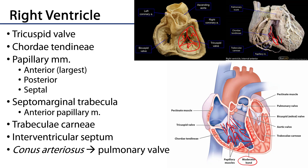The walls of the ventricles are very rough with ridges of muscle. These are invaginations of the myocardium surrounded by the endocardium, called trabeculae carneae, or meaty beams. We'll have a better opportunity to see this in the left ventricle; we don't have a good view of it here in the right ventricle.